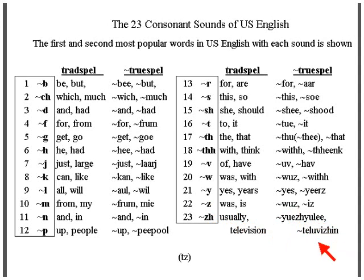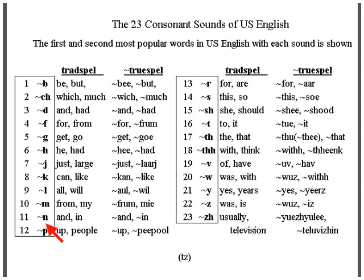And those are the 23 sounds of USA English. The most popular sound — can you guess it? — is N, as in 'and' and 'in.'